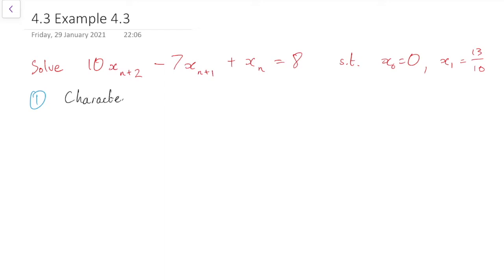So as always, we start off with the characteristic equation, where the 10xn+2 becomes a 10λ², the xn+1 becomes a λ, the xn becomes a 1, and we're ignoring the right-hand side for the moment, so that's 0 on the right.